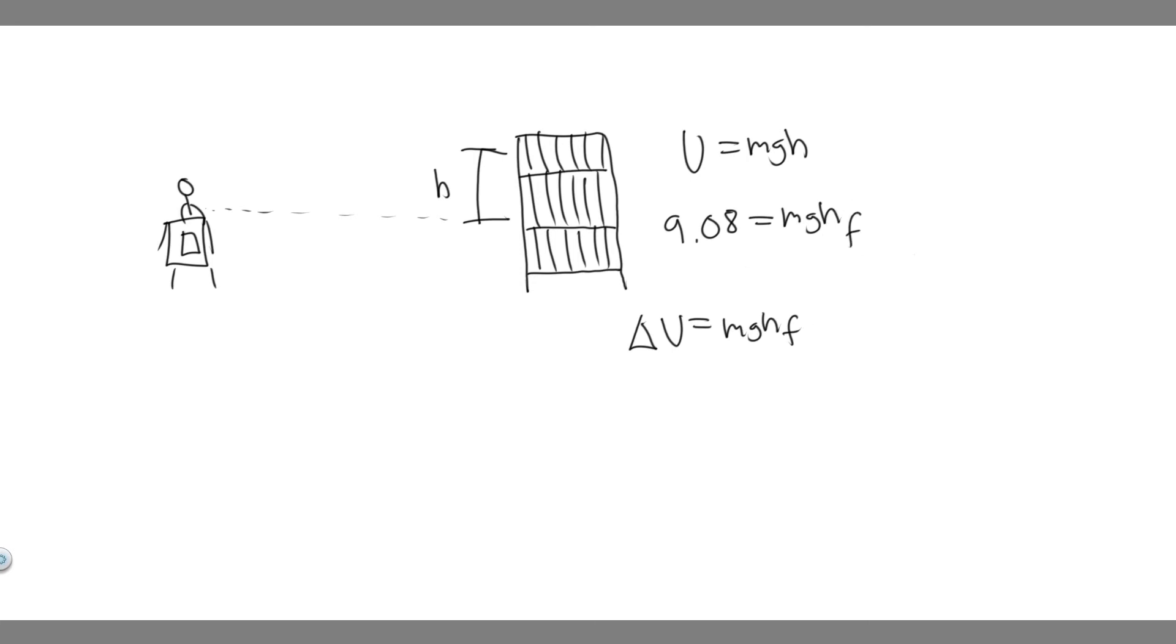What we're trying to find is how high the bookshelf is above the desk. Remember, we set the initial height to be zero. So whatever H final is, it's just going to be how high above the desk it is. So we're solving for H final.